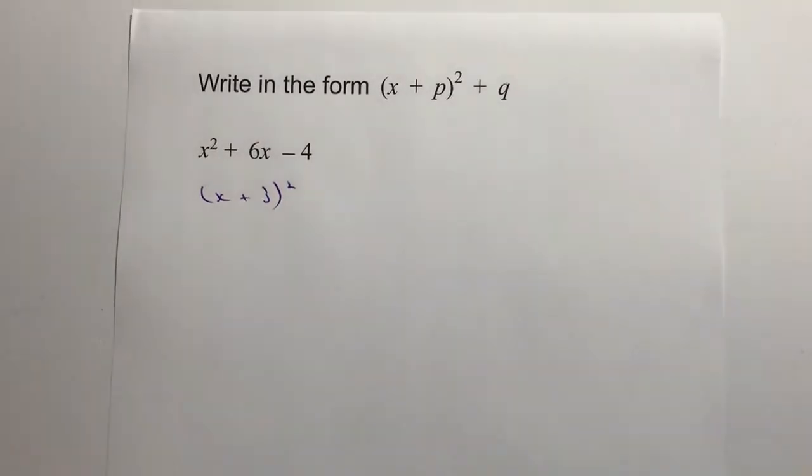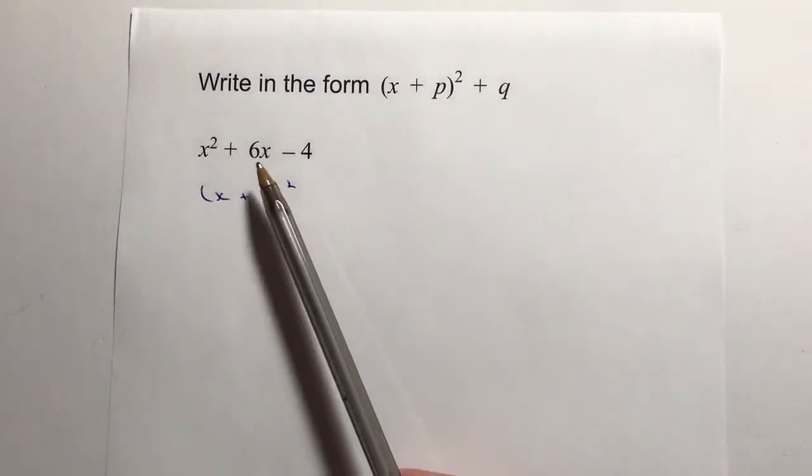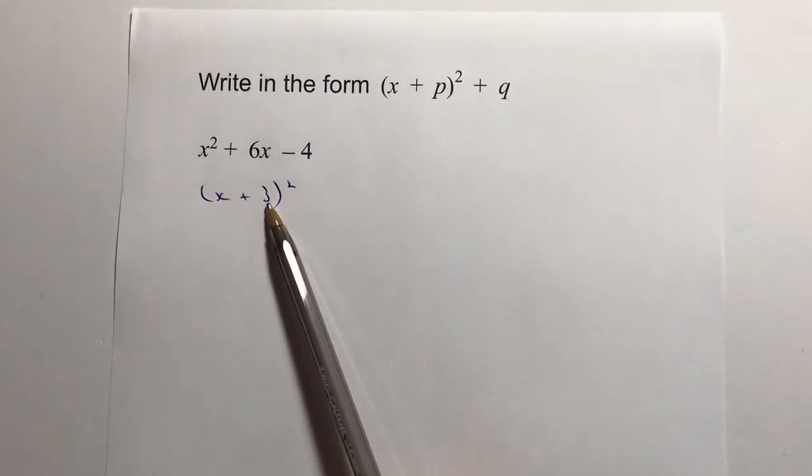And the method is to take the first two terms and basically write them like that, where what I've done is I've halved this number to make it 3, and then we square it.